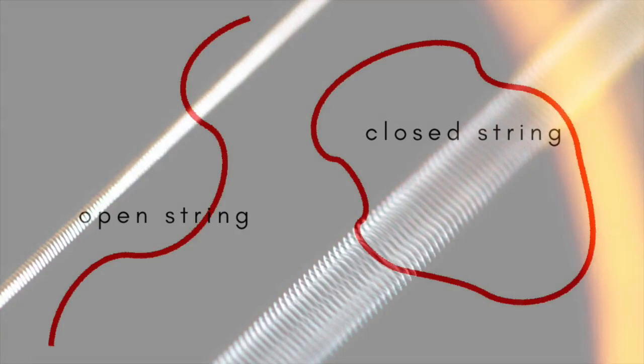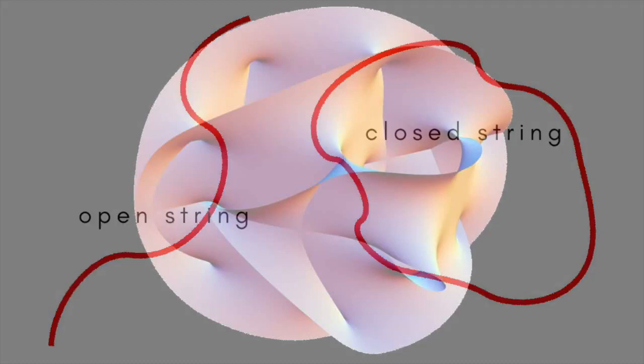These strings have the shortest meaningful length in nature, known as the Planck length, equal to about 1 billion trillion trillionth or 10 to the minus 33 of a centimeter. But they have no thickness, and for the theory to make sense, the universe must have nine space dimensions and one time dimension.